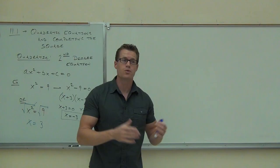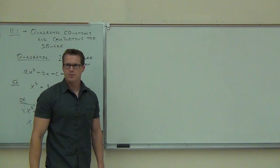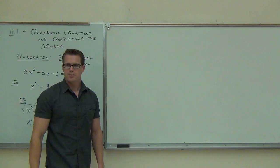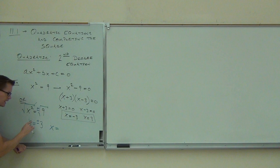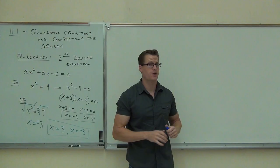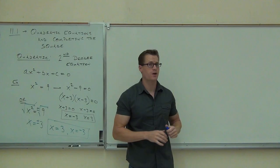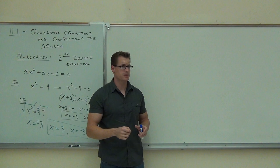In order to get both solutions, what we do is put both a plus and a minus there. If you put plus or minus, that's saying I'm going to have two solutions — positive 3 and negative 3. So we write x equals positive 3, and x also equals negative 3. Every time you take a square root, you must include plus or minus.